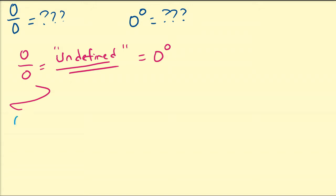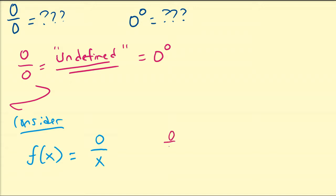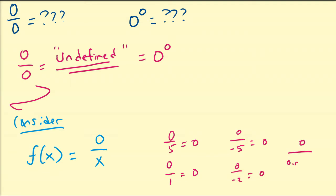Let us first consider the following functions. Consider the function f(x) = 0/x. If we plug in a bunch of values for x, we're going to get zero divided by five — that's zero. Zero divided by one — that's zero. Zero divided by negative five — that's zero. Zero divided by negative two — that's zero. And zero divided by really, really small numbers is also going to be equal to zero.